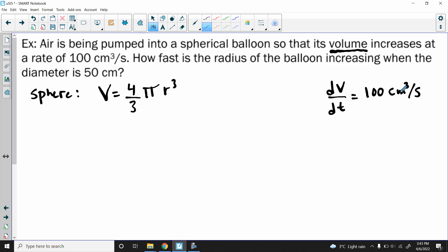How fast is the radius of the balloon increasing? That's what we're looking for. dr/dt is our question mark. And then we're given a moment in time when it is 50 centimeters, and that's the diameter, so the radius would be 25.